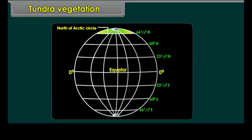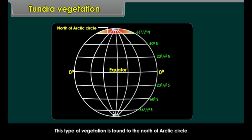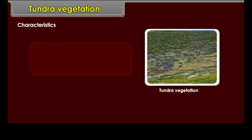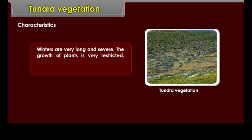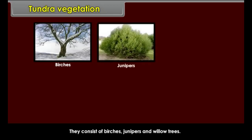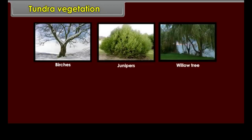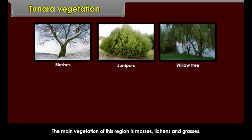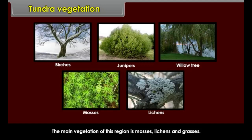Tundra Vegetation is found to the north of the Arctic Circle. Winters are very long and severe, and the growth of plants is very restricted. Short, saturated plants and trees grow adjoining the taiga forests, consisting of birches, junipers and willow trees. The main vegetation of this region is mosses, lichens and grasses. Summers are short and certain flower-bearing plants also grow.